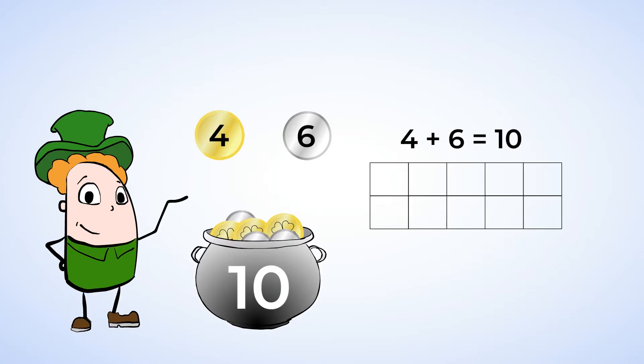We could also look at our ten frames too. Here are those four gold coins. And how many spaces are empty for the silver coins? Six. We can always count to be sure though. One, two, three, four, five, six. And that's the same number that we found in our mighty rainbow. Now we know for sure that four gold coins plus six silver coins make a total of ten magic coins.